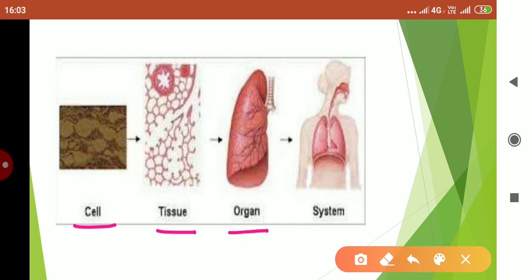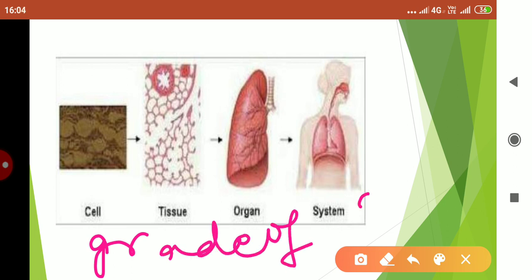And when many organs work together, it form a system called as organ system. And organ system together forms an organism. So this is about the grade of organization in the body.